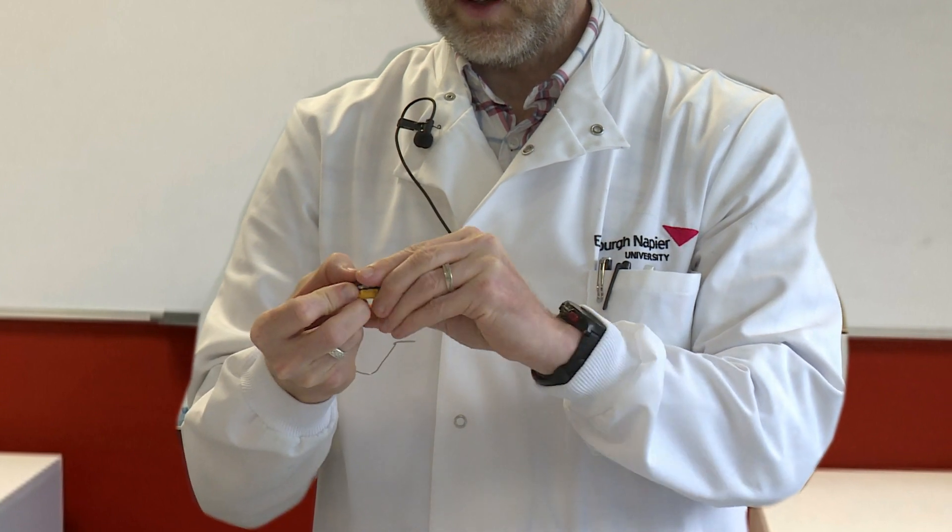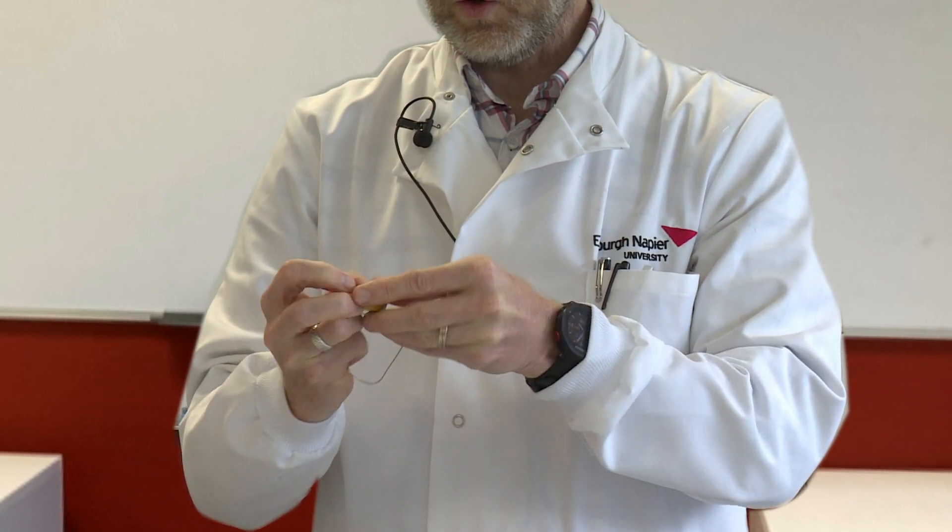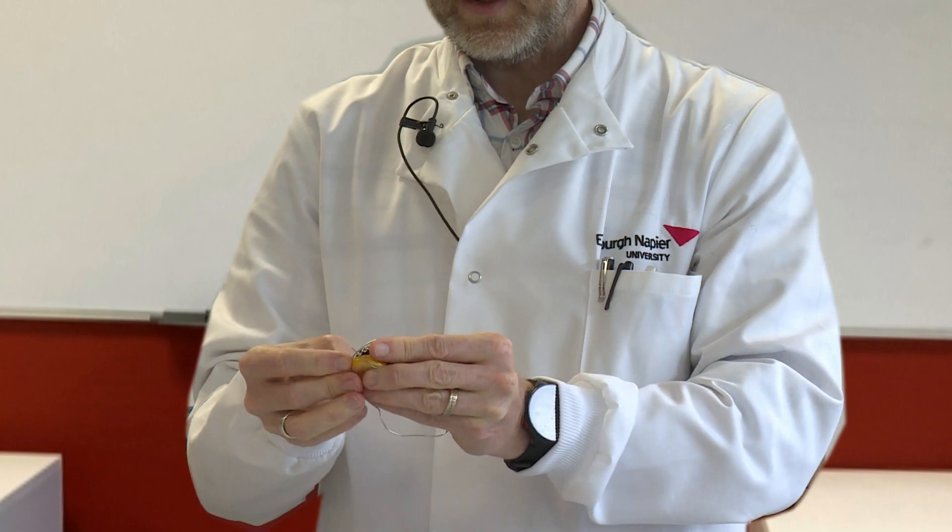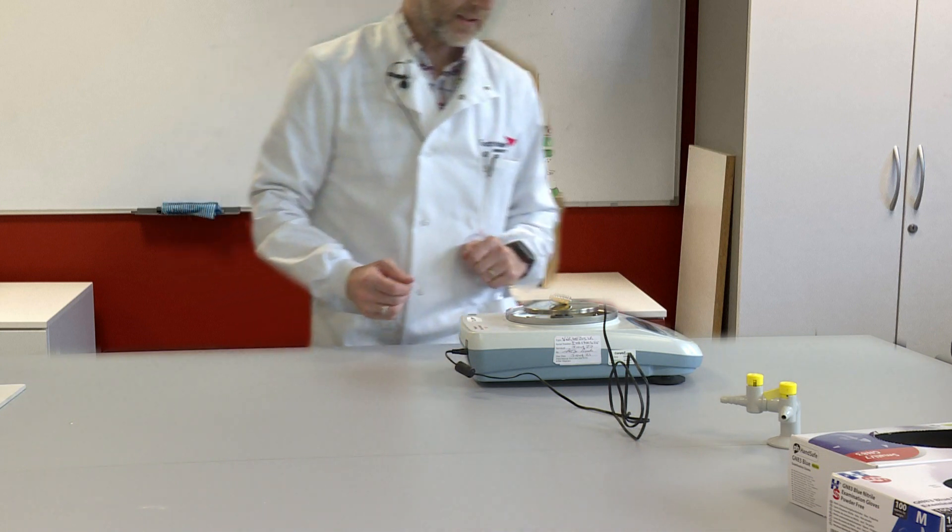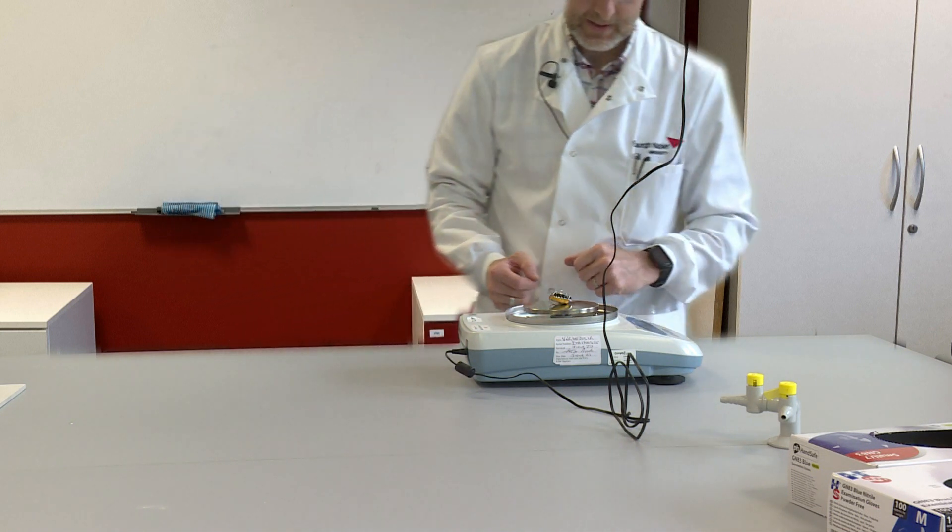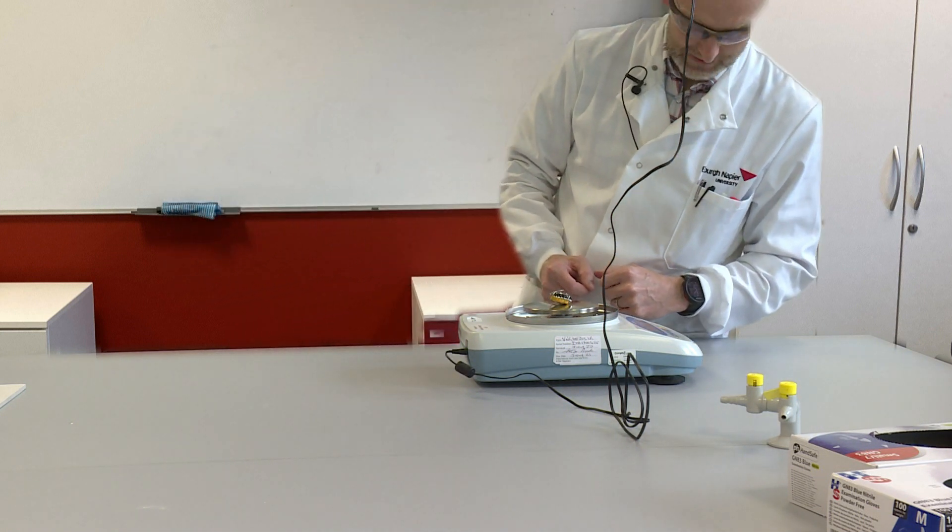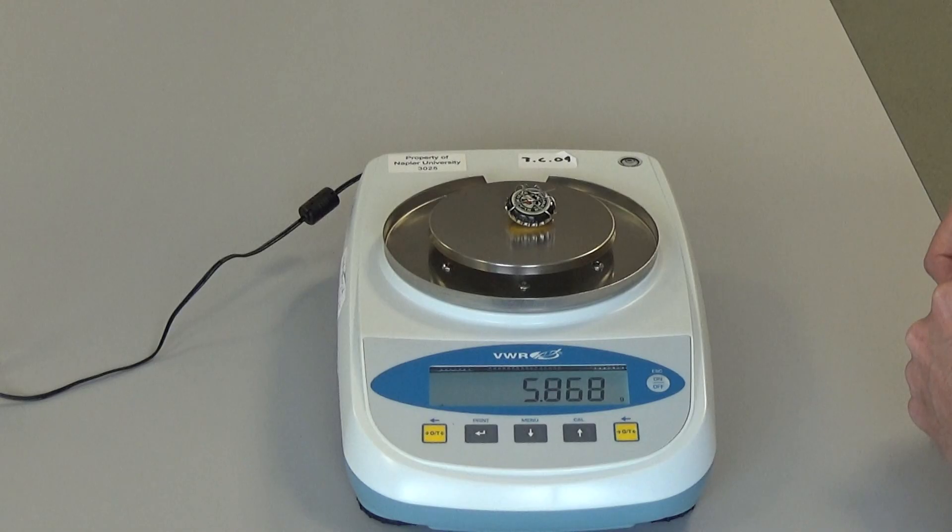That should hold the bottle tops tightly closed. So I'm going to weigh the magnesium ribbon that is now inside the two bottle tops held together by the nichrome wire, and that is 5.868 grams.